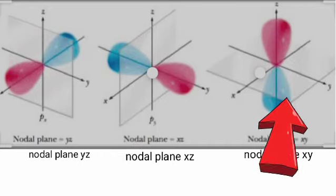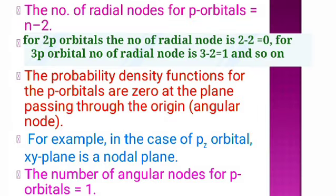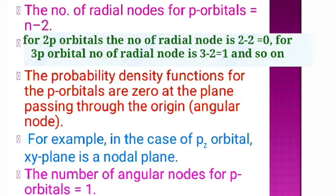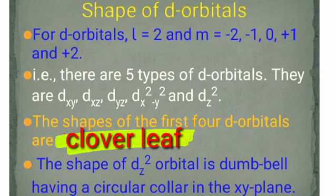In the case of p-orbitals, both angular nodes and radial nodes are present. The number of radial nodes is n - l - 1, which gives n - 2 as the general formula for p-orbitals. For example, in the case of 2p-orbital, radial nodes = 2 - 2 = 0, so there are no radial nodes. In the case of 3p-orbital, radial nodes = 3 - 2 = 1, so there is one radial node present.